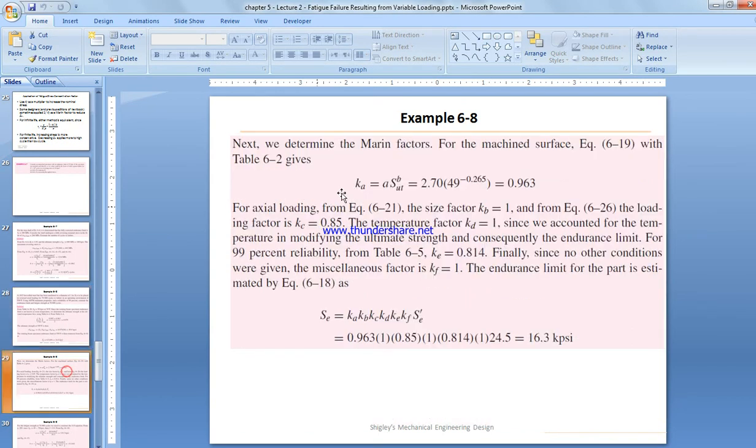Now we need to calculate the Marin factors: all of them - KA, KB, KC, KD, KE, and KF. So we need to find the surface, the size, the loading, the temperature, the reliability, and the miscellaneous factors. We start with the surface.